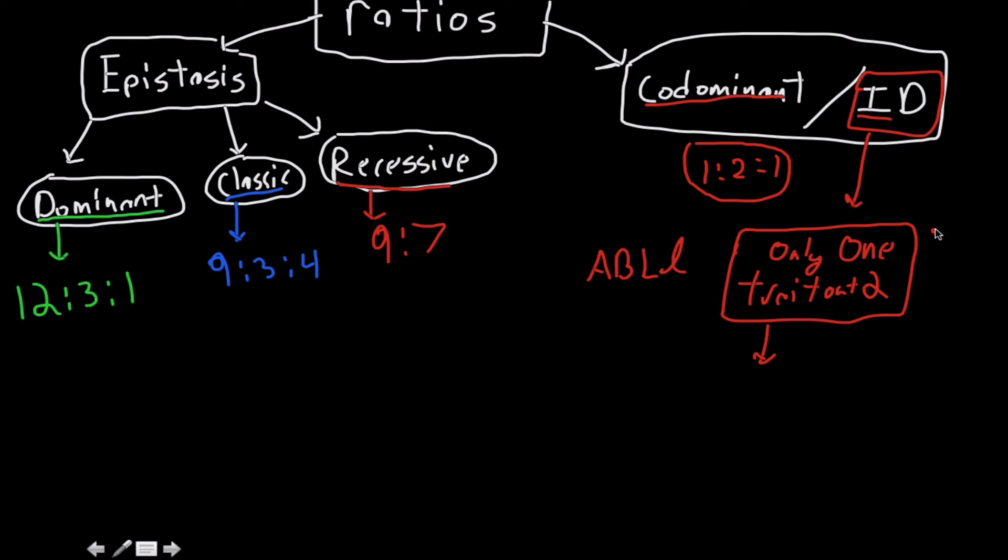But this is for only one trait out of two. So one out of two in a dihybrid cross. What you get is a 6 to 3 to 3 to 2 to 1 to 1, which can be rearranged to a 1 to 2 to 1. If we put that 6 in the middle, that's the 2 here. This is also a 1 to 2 to 1. I'm just arranging it in chronological order of increasing.